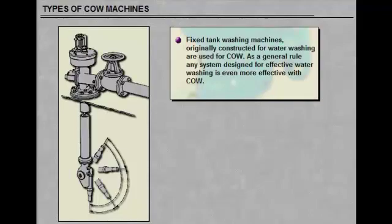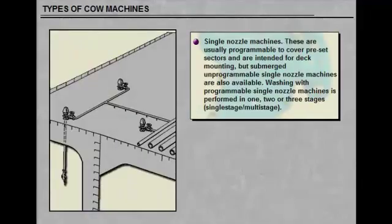Single nozzle machines. These are usually programmable to cover pre-set sectors and are intended for deck mounting, but submerged, unprogrammable single nozzle machines are also available. Washing with programmable single nozzle machines is performed in one, two or three stages, single stage or multi-stage.